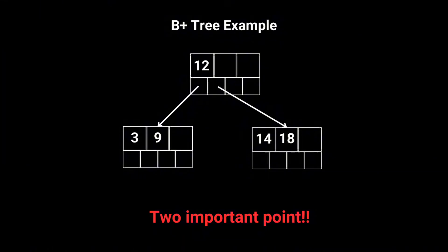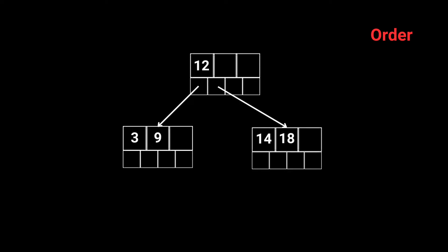First up is the order of the tree. Think of the order as the maximum number of children an internal node can have. Heads up if you're a CS student, some professors might call this degree or order, but they're talking about the same thing. For our discussion, we'll stick with order.